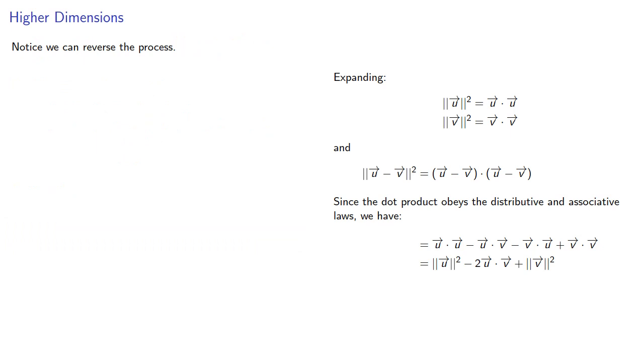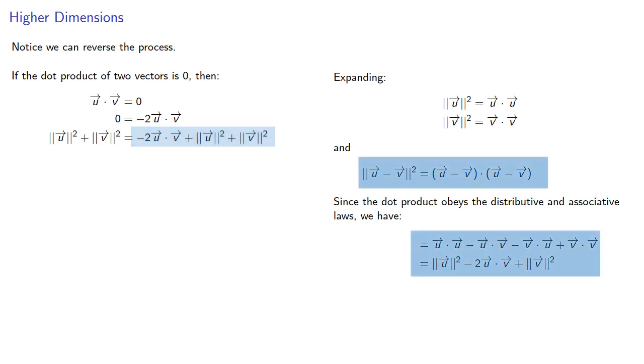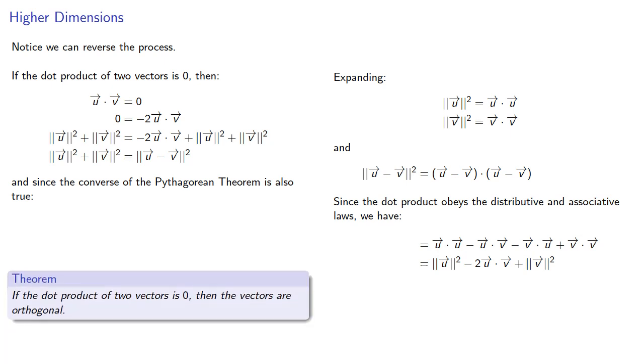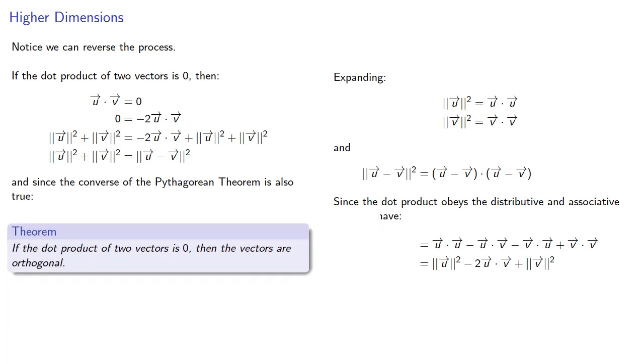But notice we can reverse the process. If the dot product of two vectors is zero, then we can multiply by -2, add ||u||² + ||v||² to both sides, and this expression on the right is the square of the norm of u - v. And since the converse of the Pythagorean theorem is also true, then we can say that if the dot product of two vectors is zero, then the vectors are orthogonal.